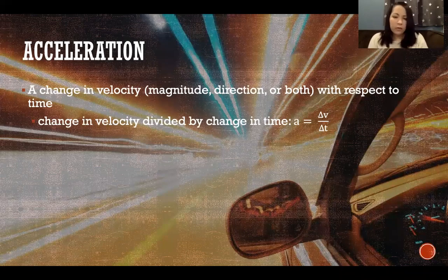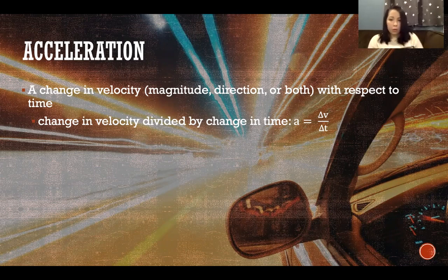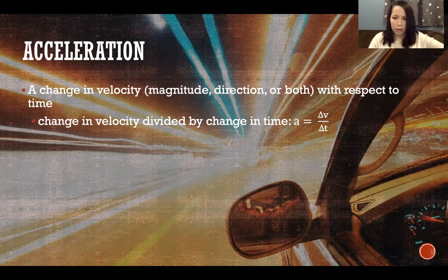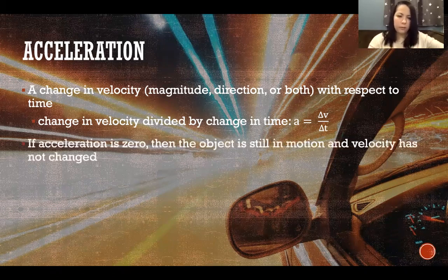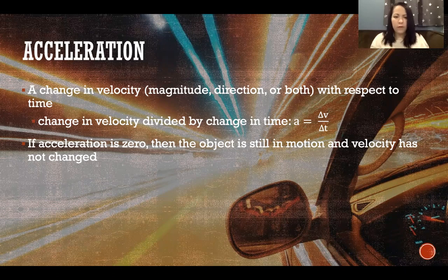Acceleration is a change in velocity — that could be a change in the speed of travel, the direction, or both. If there's a change in speed, direction, or both with respect to time, then acceleration is occurring: change in velocity divided by change in time. If acceleration is zero, it means the object is still in motion but velocity hasn't changed — zero acceleration doesn't mean no motion, it means the velocity is constant.